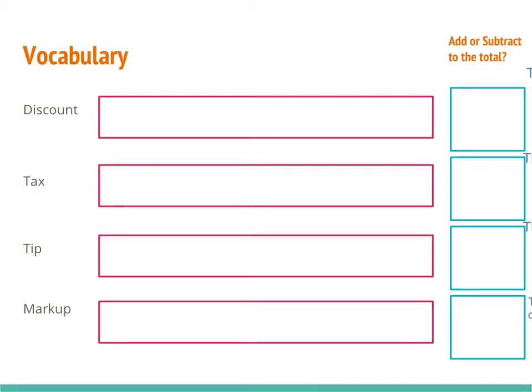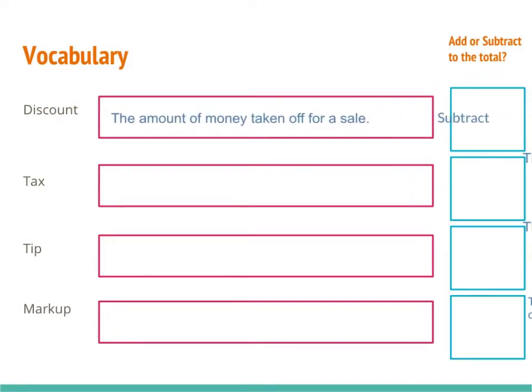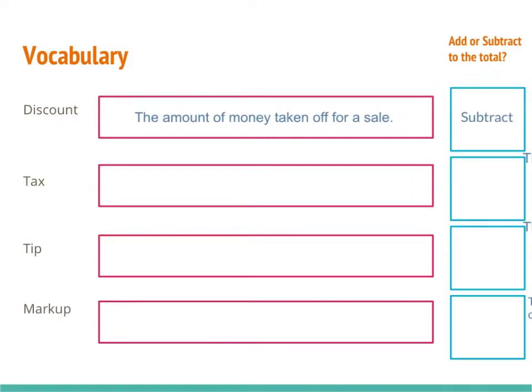We have four terms that we need to talk about, and we need to figure out whether we're going to be adding that to the total or subtracting from the total. When we talk about discount, discount is the amount of money taken off for a sale. And since we're going to be taking it off, that means we're going to be subtracting it from whatever our total is.